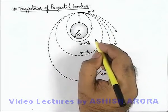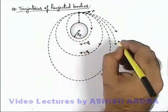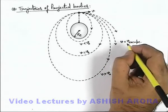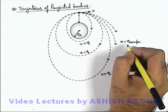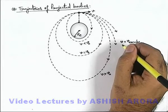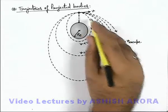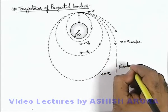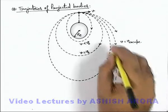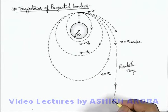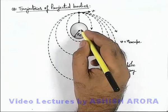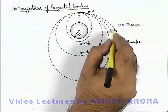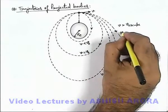Now let's discuss what will happen if v equals the escape velocity. If v equals vₑₛ, we know that the body will not come back on Earth and will be able to overcome Earth's attractive forces. So obviously the path will be unbounded and this path will be a parabolic trajectory — the body will move away and reach to infinity and will not come back. If v is more than escape velocity, the body will follow a hyperbolic trajectory.